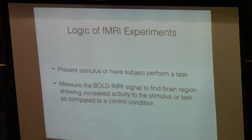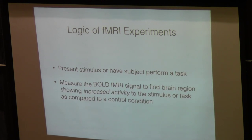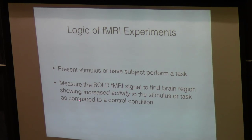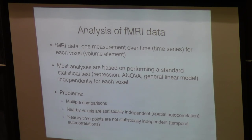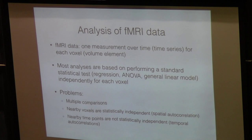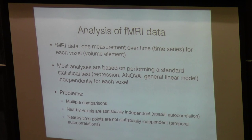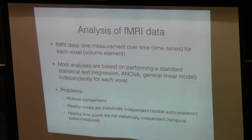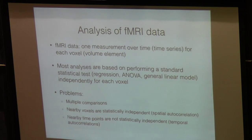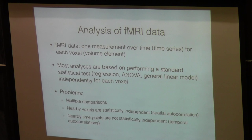The idea behind fMRI experiments is to present a stimulus or have somebody perform a task in the scanner and then compare it to some control condition. You measure the BOLD fMRI signal to find a region showing increased activity to the stimulus or task compared to that control. What we do then is generate a time course of activity for voxel elements within the brain, and use general linear modeling or basic statistics to look at how experimental conditions are correlated with activity of these time series — essentially how variance associated with experimental conditions maps onto this time series.